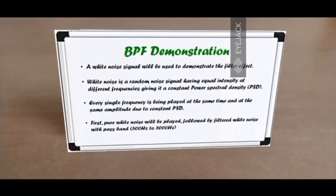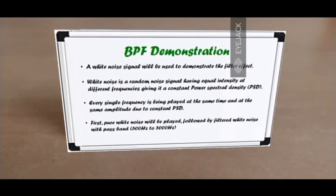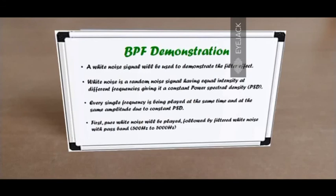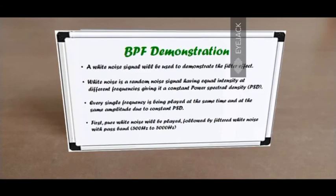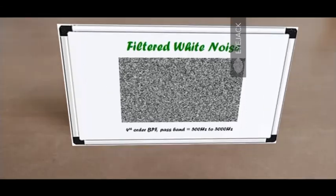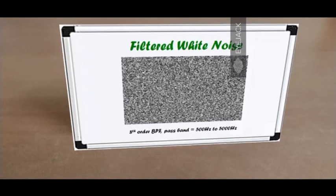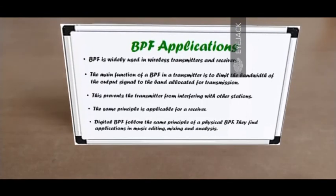Now it's time to experience what a bandpass filter sounds like. For demonstration, I'll be using a white noise signal. White noise is a random noise signal having equal intensity at different frequencies, giving it a constant power spectral density — meaning every frequency in the human audible range of 20 Hz to 20 kHz is played at the same time and amplitude. I'll play pure white noise, then apply a bandpass filter of 500 to 5000 Hz — first a fourth order, then an eighth order.